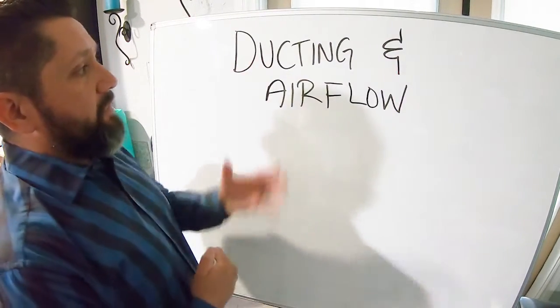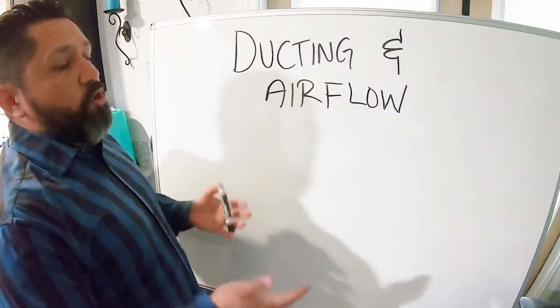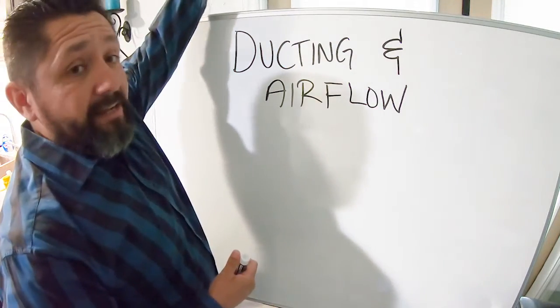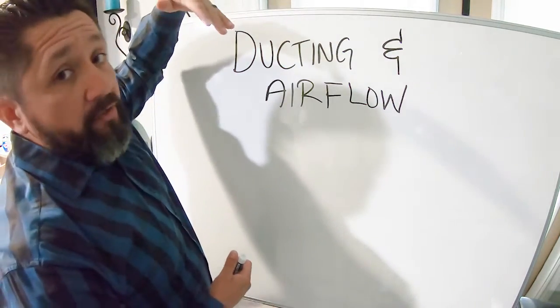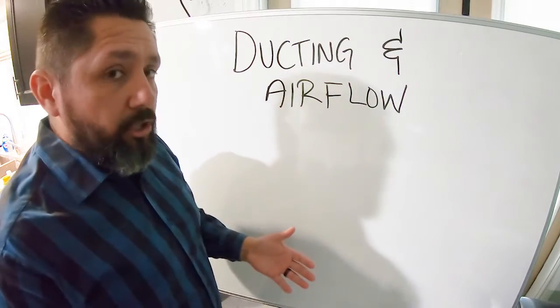Good afternoon guys, so today we're going to be talking about ducting and airflow. Ducting and airflow is all your vents that you have inside your house, usually in the ceiling, blowing all the air out. You have one large vent where the filter normally goes.